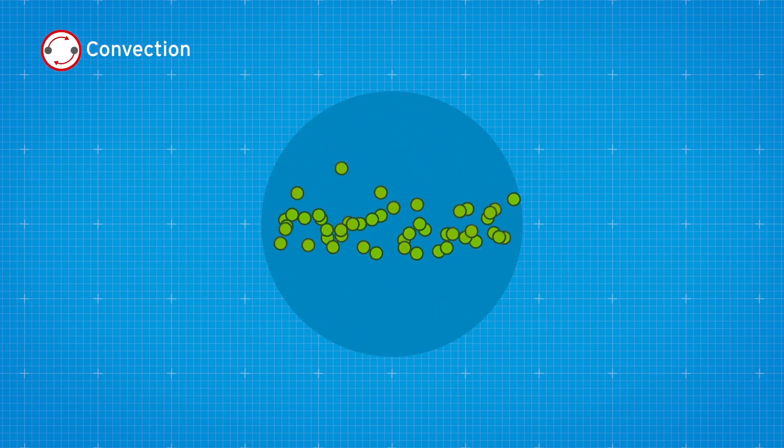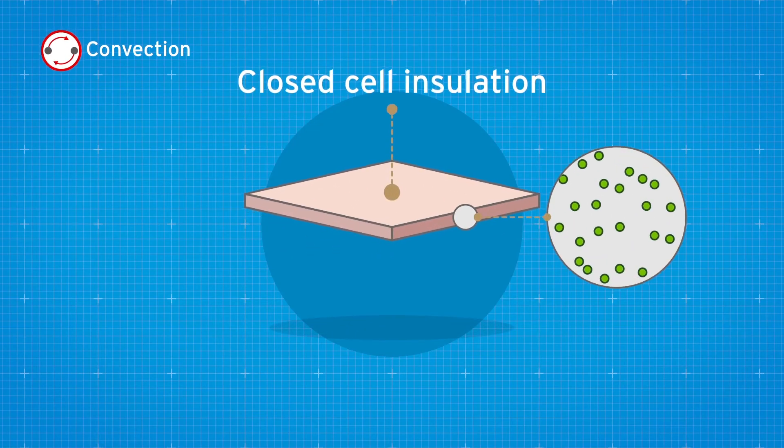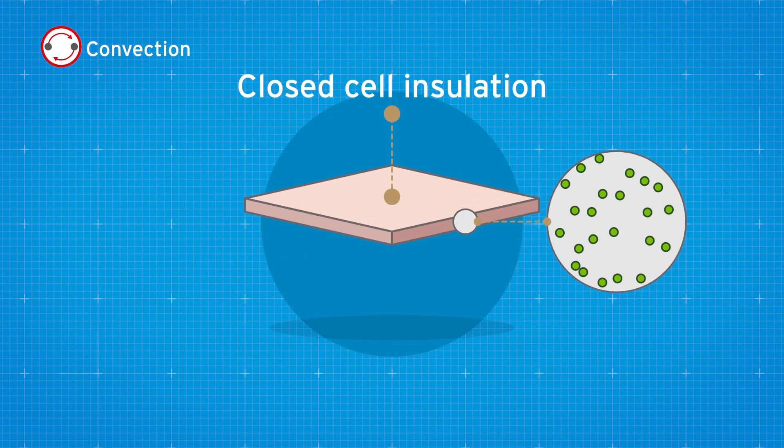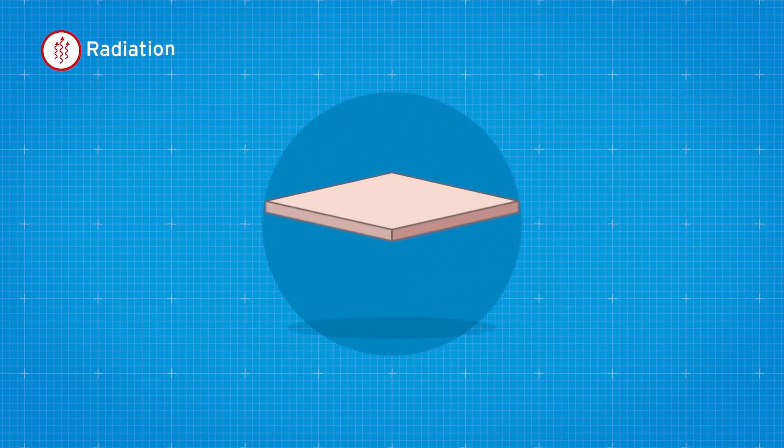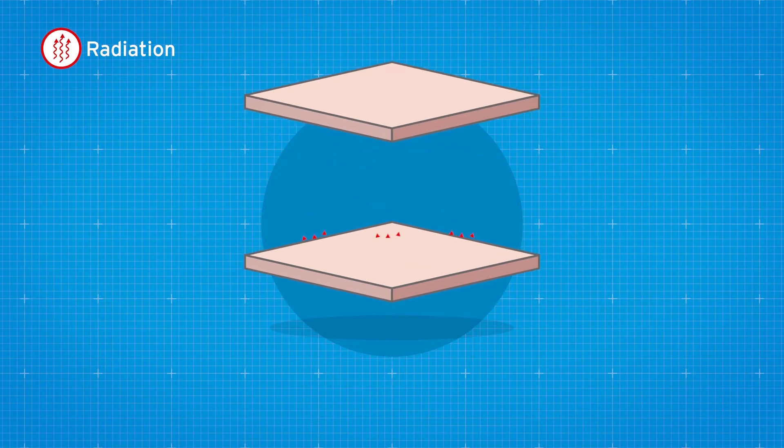Closed cell insulation with small cell sizes inhibits convection within the cell, making them less prone to affecting neighboring cells. Radiation is the method of heat transfer across space from one body to another as energy.